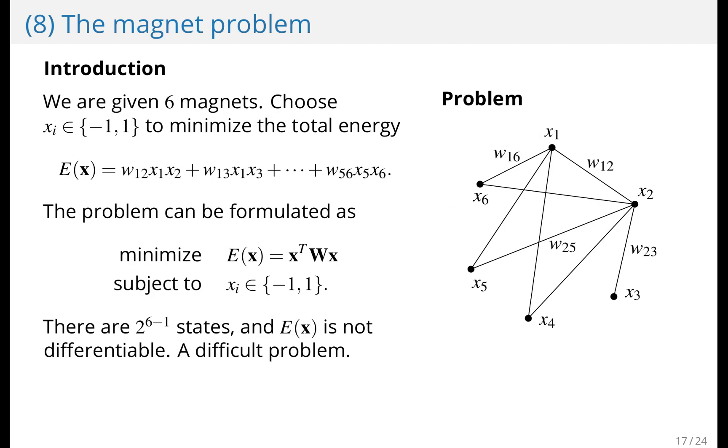The magnet problem. We're given six magnets, each one has one of two configurations, up or down. There are interactive forces between each pair of magnets. And we would like to choose a configuration for every magnet so as to minimize the total energy in the system.